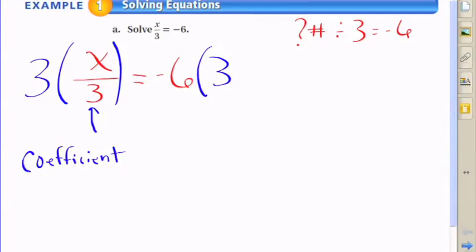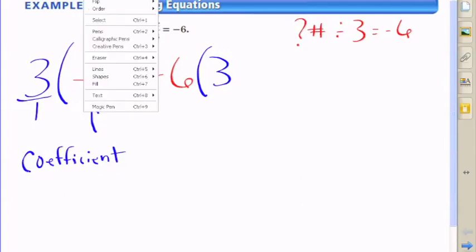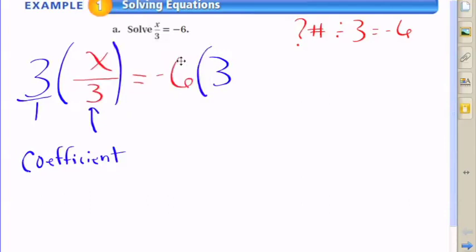And so what we get here is 3 times x over 3 equals negative 6 times 3. And you can look at it as 3 divided, 3 over 1 times x over 3,